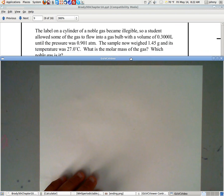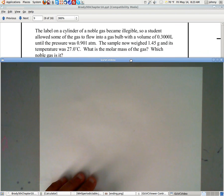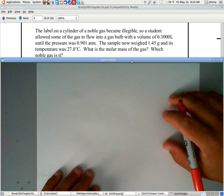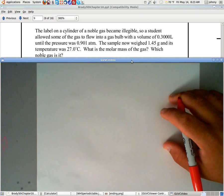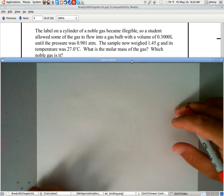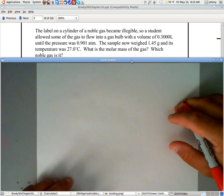As you can see here, let's try to list it as much as possible. It says the label on a cylinder of a noble gas became illegible, meaning they could not read it.